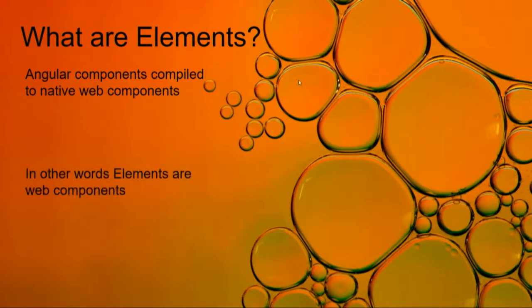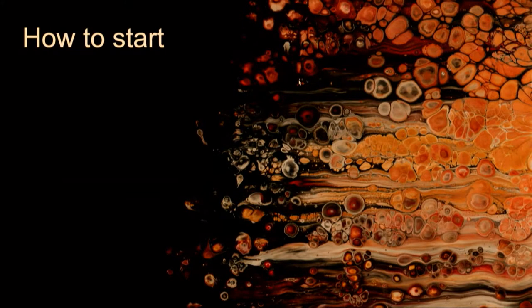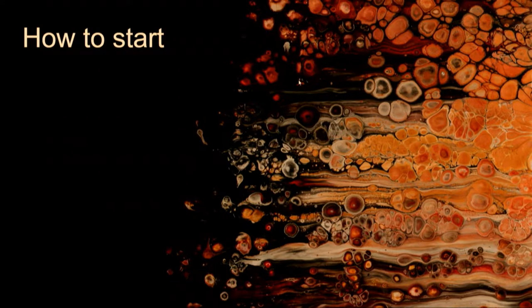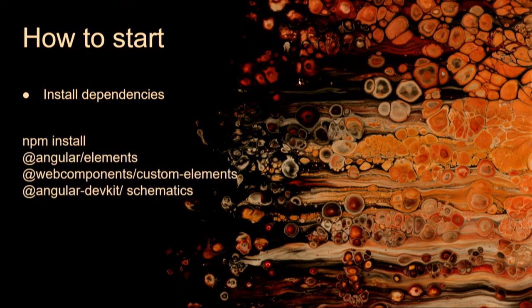What are elements? They're just web components that run with Angular internally. How do we start with Angular elements? I start with an Angular CLI project — I think just about everyone uses a CLI for Angular at this point. First thing, we've got to install a couple of dependencies: npm install Angular elements, web components custom elements, and Angular dev kit schematics. Those are the only dependencies you need.